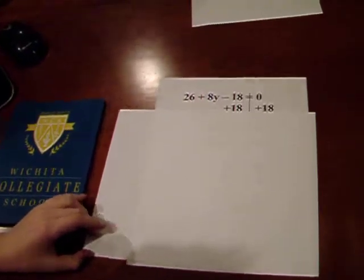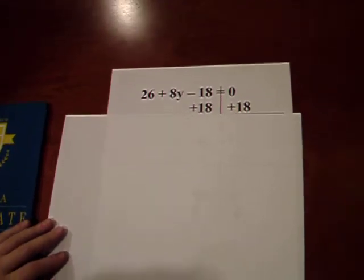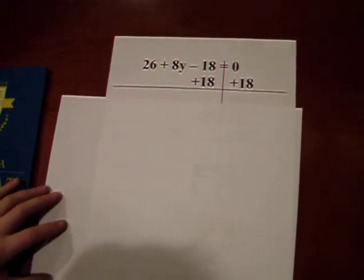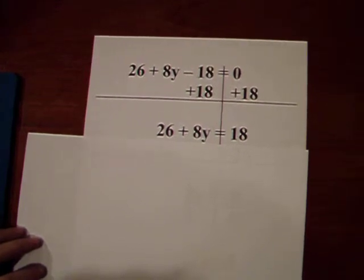26 plus 8y minus 18 equals 0. First, you add 18, which is 26 plus 8y equals 18.